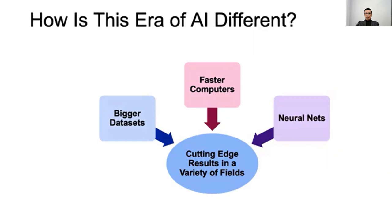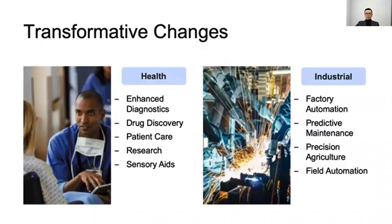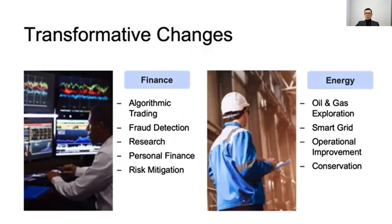Nowadays we also have faster computers, so a computer can make faster and more accurate calculations. Neural networks are producing cutting-edge results in a variety of fields. Transformative changes can be seen in healthcare, industrial, finance, and energy sectors.